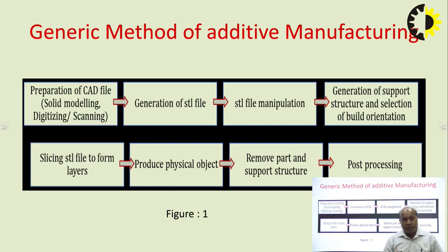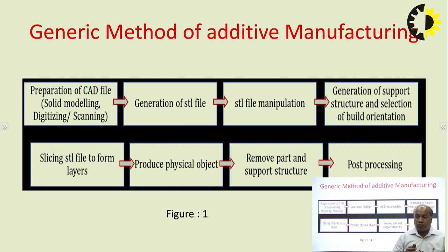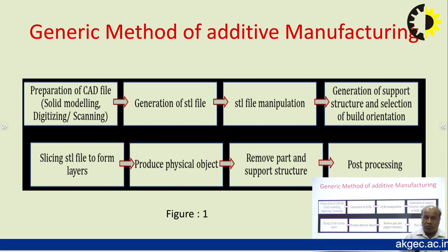Not only can we create the solid model from 3D CAD software — we can also use a scanning image or data image to convert into a 3D model. Once we have the 3D model, we must convert it into a specific format called the STL format. STL, or stereolithography triangulation, requires generating an STL file from the CAD model.